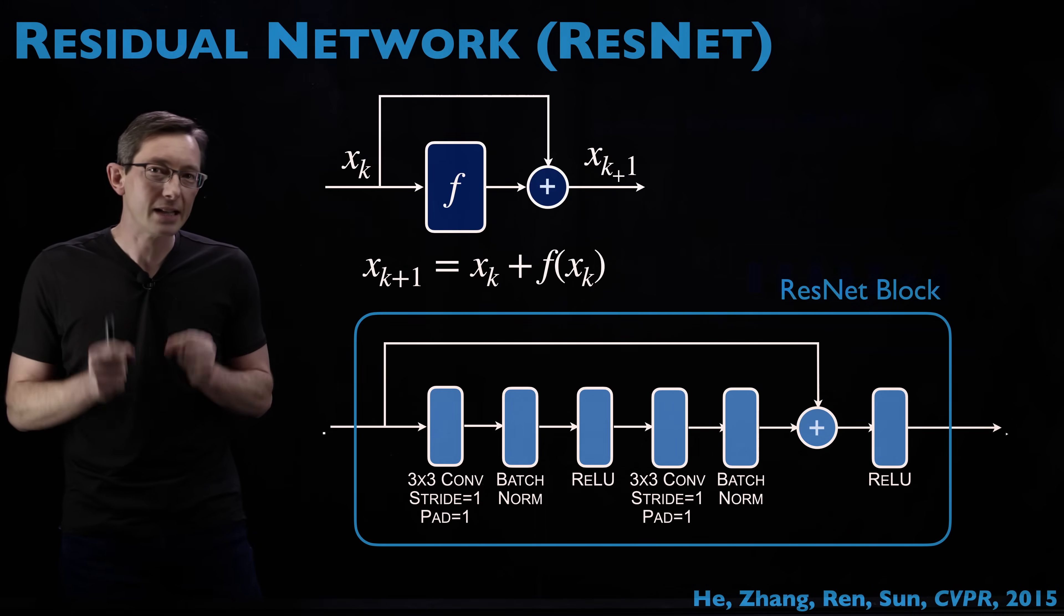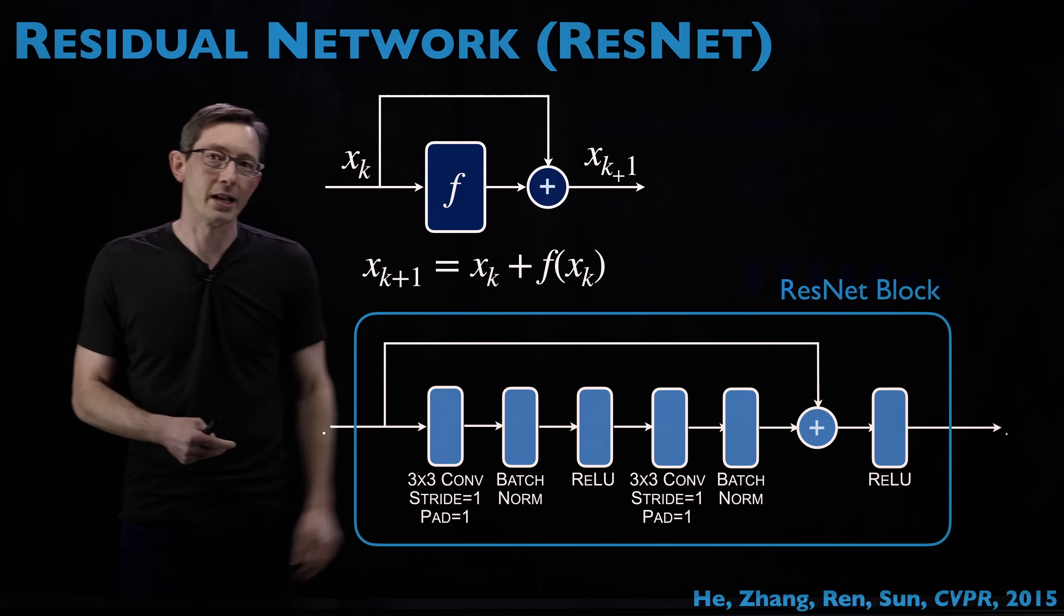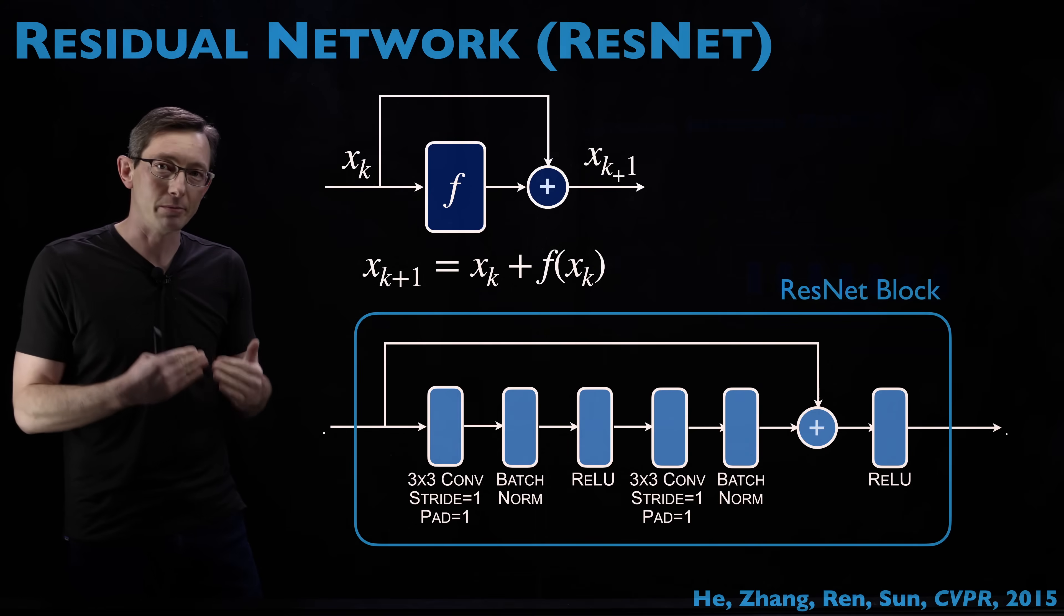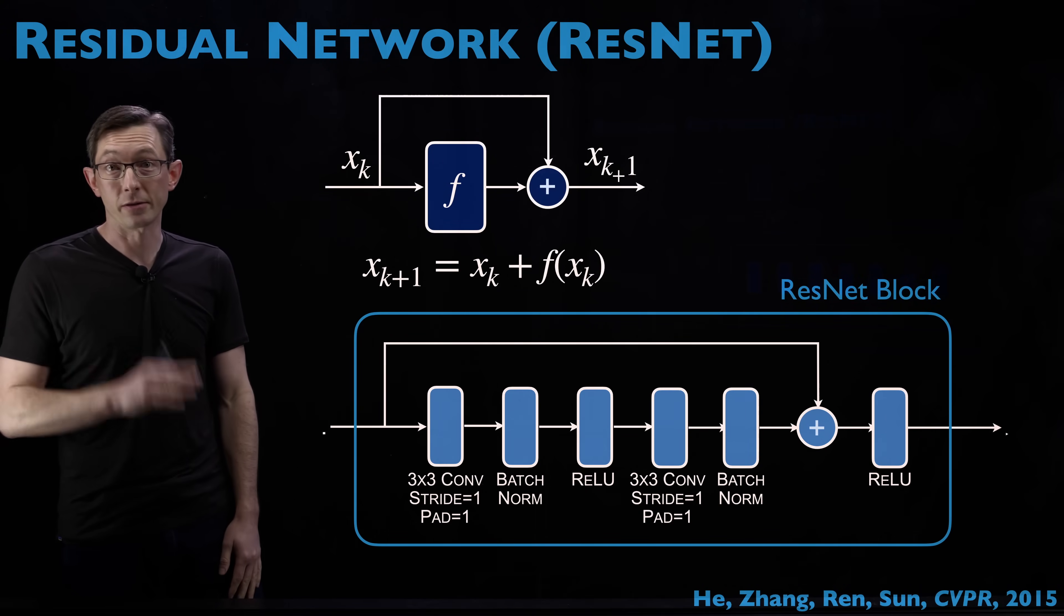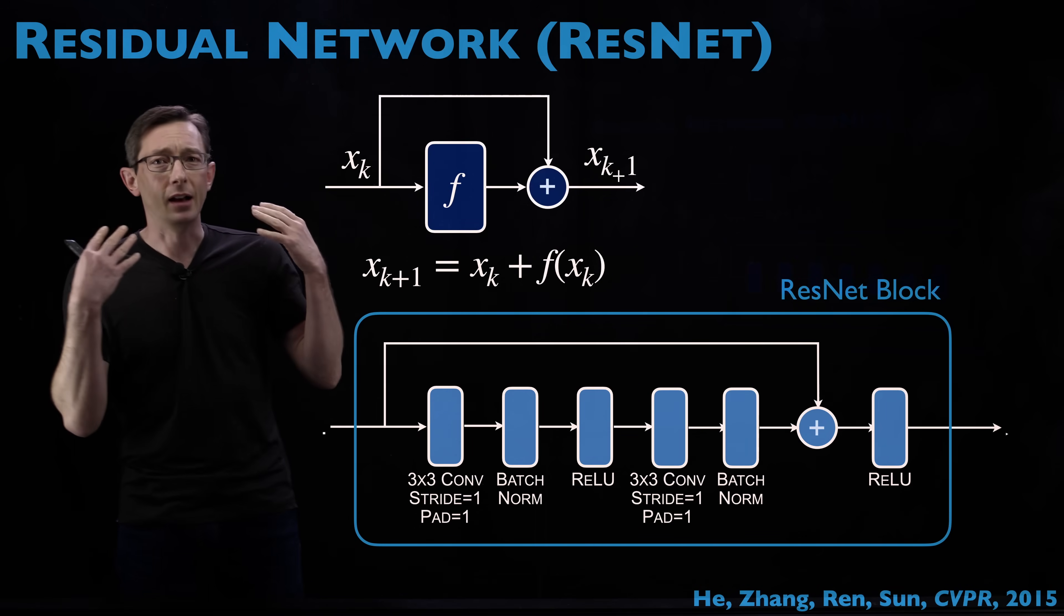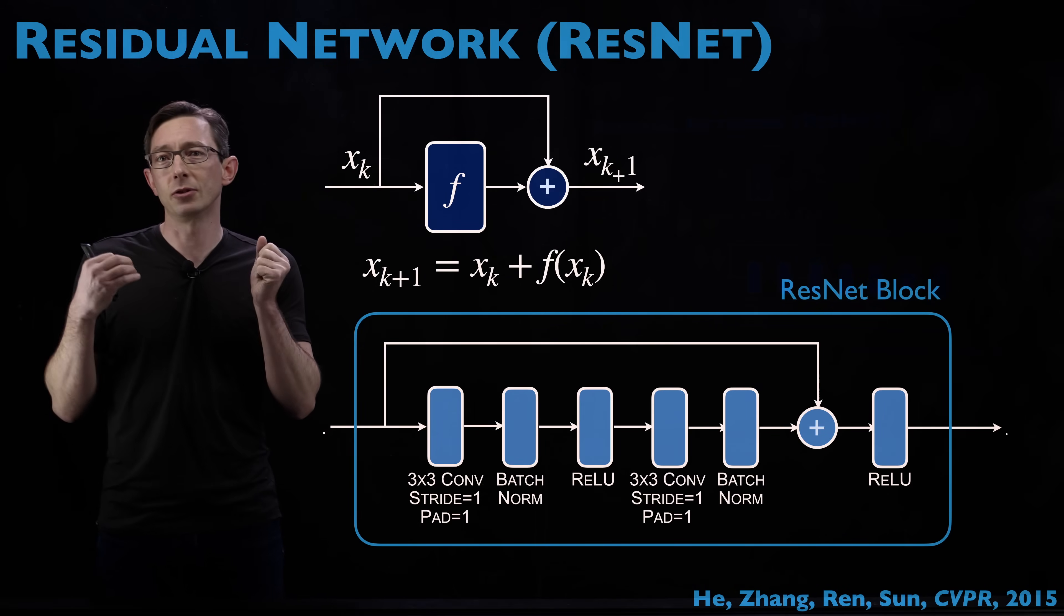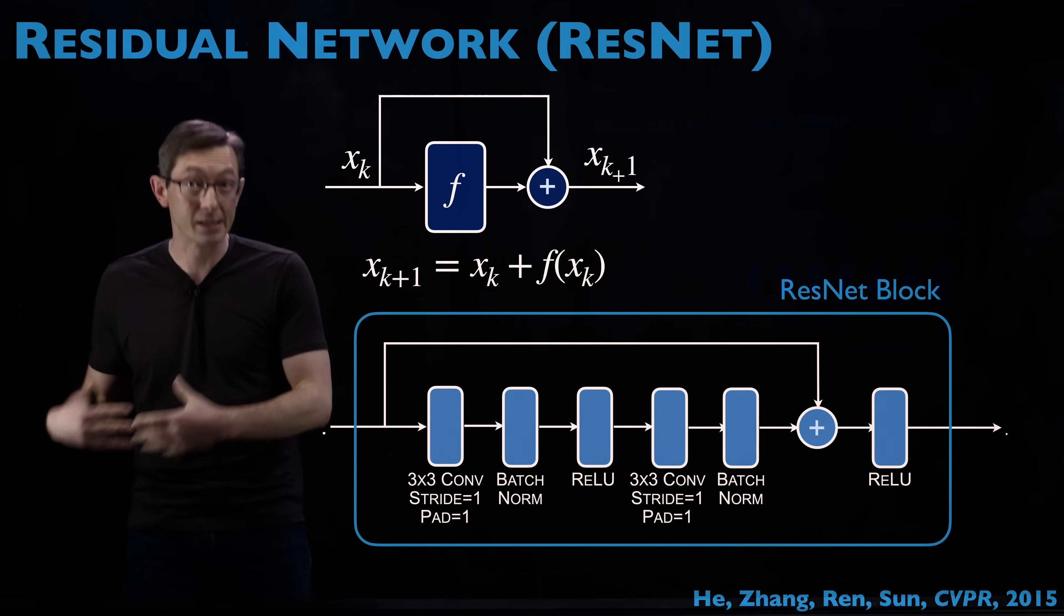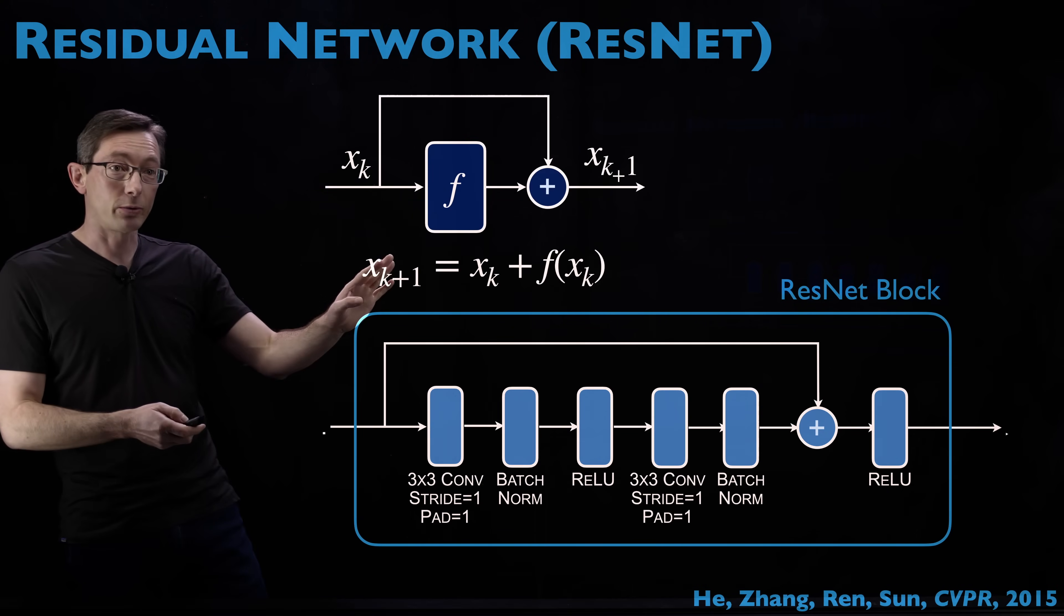Welcome back. Today we're talking about the residual network or ResNet architecture, one of the most important modern deep neural network architectures used in applications from super resolution to image classification to modeling physical systems like ordinary differential equations. Let's jump right into it.